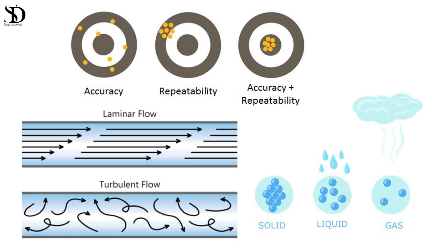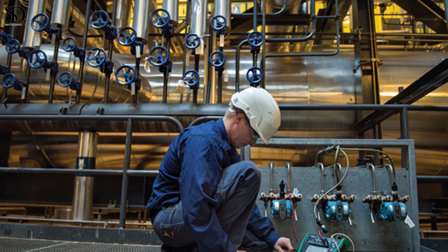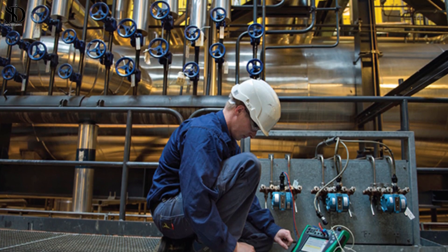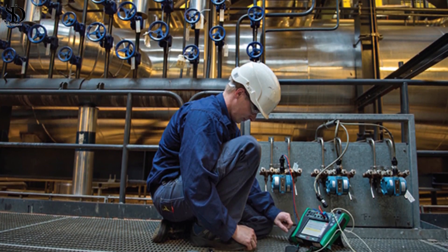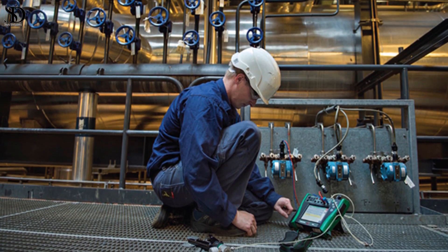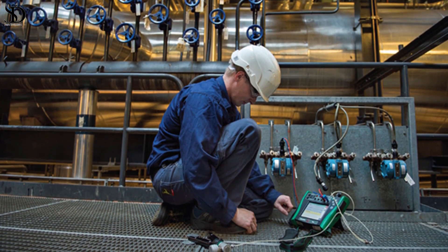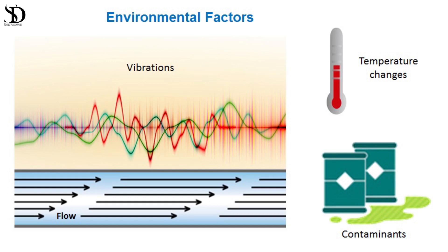Challenges in flow measurement. Accuracy: achieving precise measurements, especially with varying flow rates and different types of fluids, can be challenging. Calibration and maintenance: ensuring consistent accuracy over time requires regular calibration and maintenance, which can be labor-intensive and costly. Environmental factors: external conditions such as temperature changes, vibrations, and contaminants can affect the performance of flow meters.